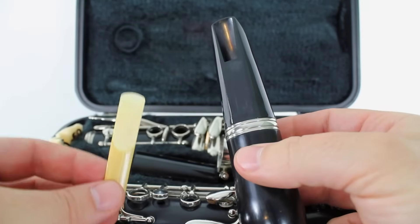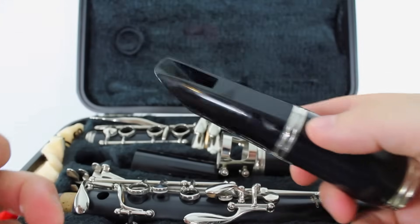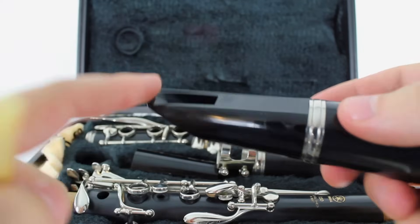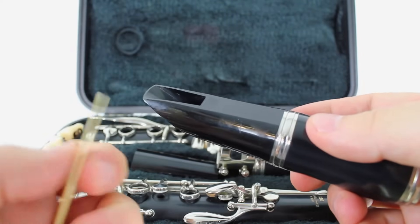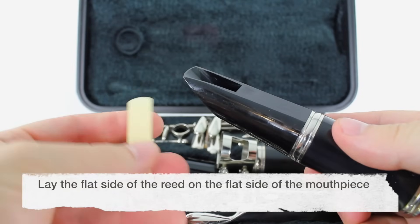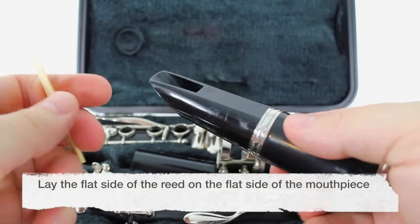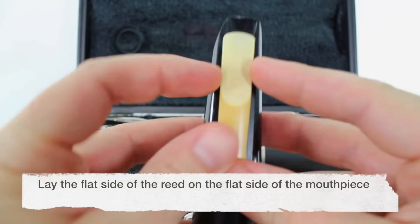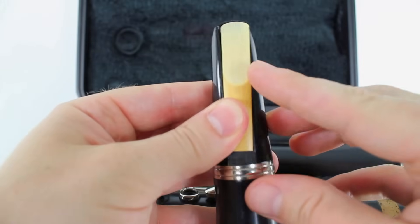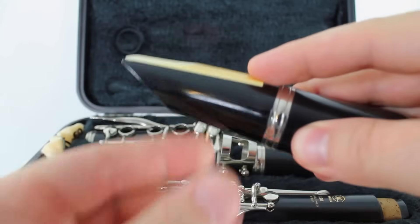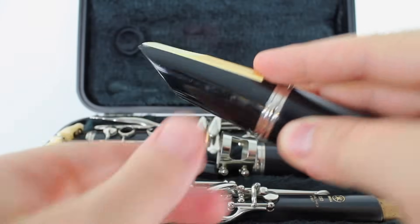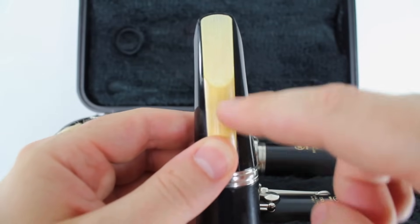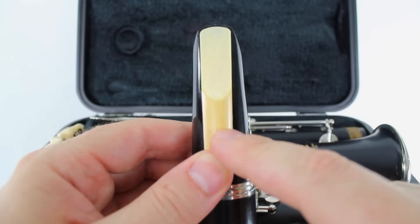Now we're ready to take our reed and attach it right here on the mouthpiece. Take a look at your mouthpiece. You can see there is a flat, smooth side to your mouthpiece where the hole is. We want to lay the reed, the flat side of the reed, on the flat side of the mouthpiece. And we want the thin end of the reed to be at the top. So you should see, on the flat side of your mouthpiece, the thin end of the reed at the top, and the thicker end of the reed, the part with the bark, is going to be towards the bottom.